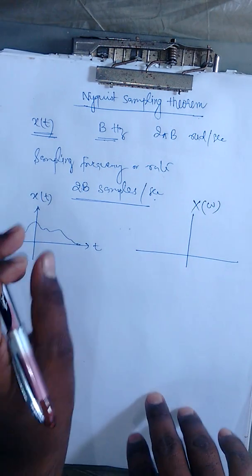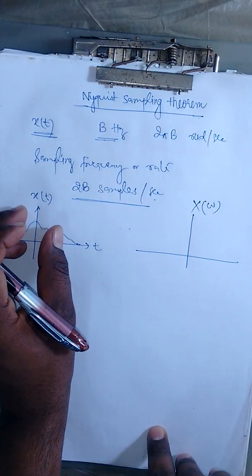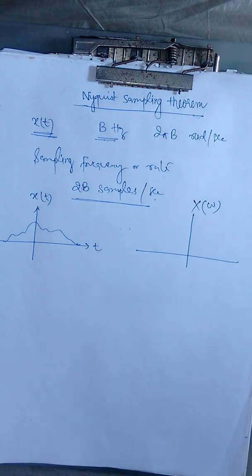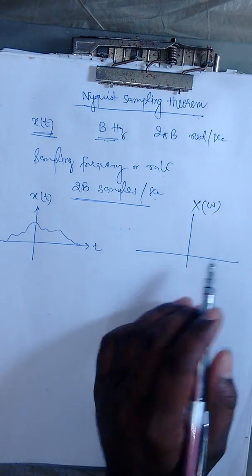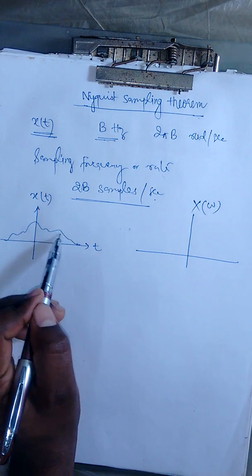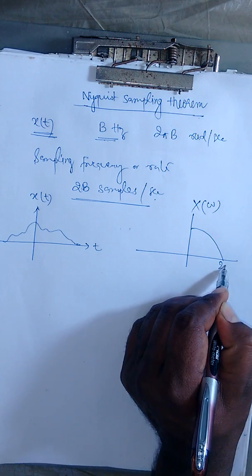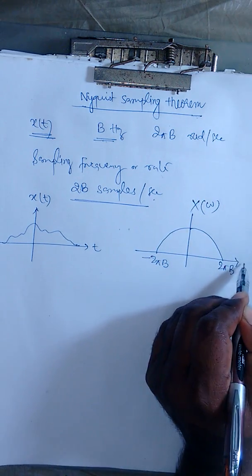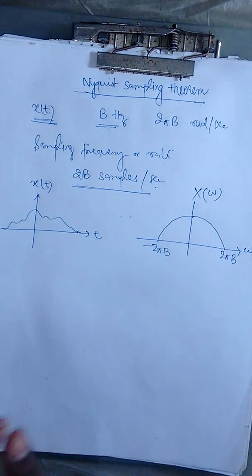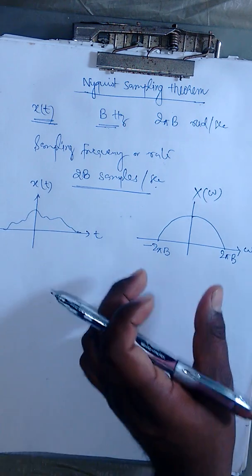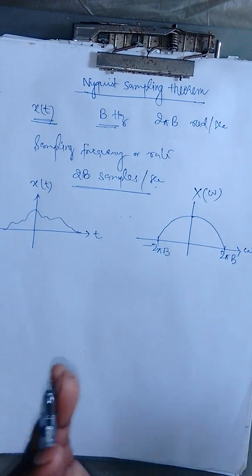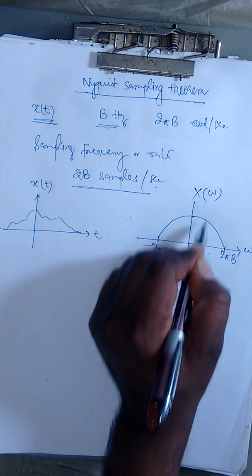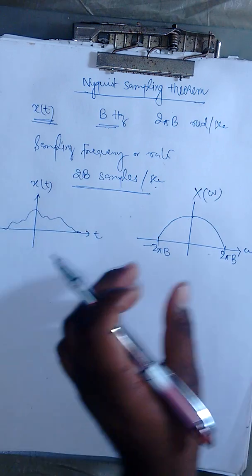Suppose x(t) has its Fourier transform as capital X(ω). I am taking an uncertain example, so I will draw the frequency spectrum roughly. For positive frequencies we have a spectrum up to 2π·beta, and for negative frequencies we have a spectrum down to −2π·beta, in the omega domain (radians). This is not the exact frequency domain shape, but it gives the idea of how far the frequencies are spread.